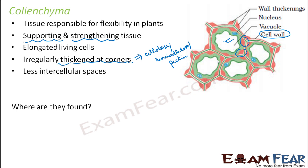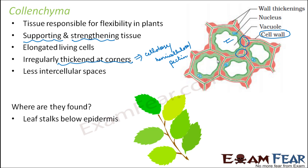Now where are they found? As I said, they are found below the epidermis, in leaf stalks below the epidermis. So that is why you can observe maximum flexibility along this area — leaf stalks, the stem. You can just twist it here and there and the flexibility is there. Also in the expanded leaves, you can fold the leaves and do whatever you want with the leaf, and that is also because on the leaves you have colenchyma.